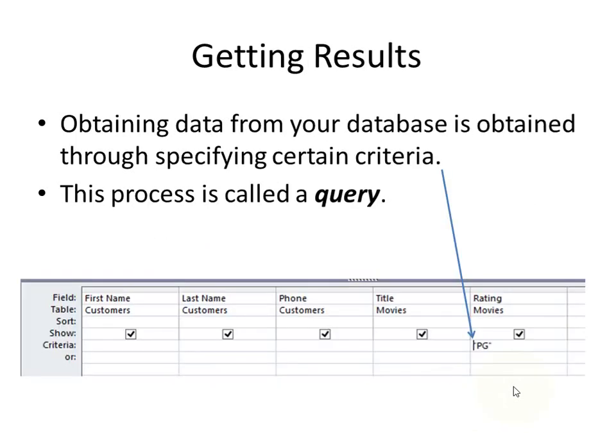To get results from your database, you're going to create what is called a query. A query is combining two tables to get some results according to a certain criteria. You'll notice we've got first name, last name, and phone number from the customers table, and title and rating from the movies table. The particular criteria we're looking for this time is PG, so it should give us a list of all the PG movies that people have checked out.